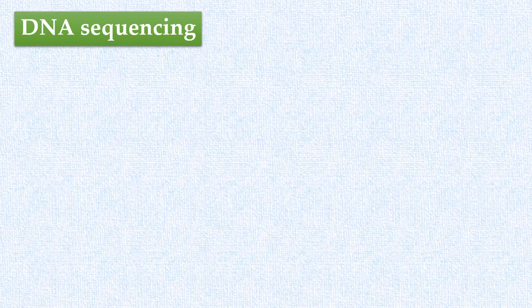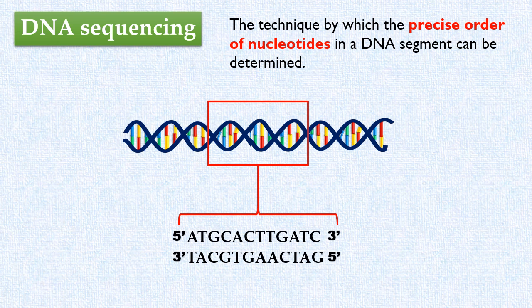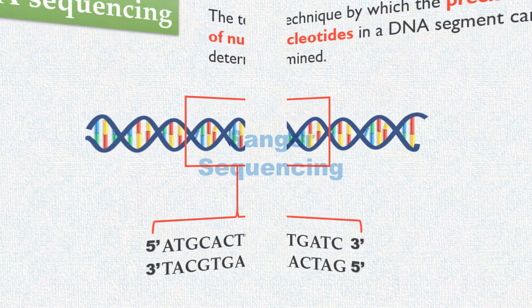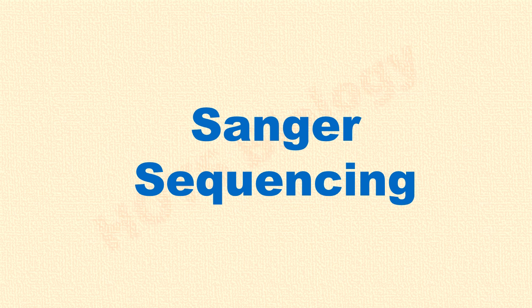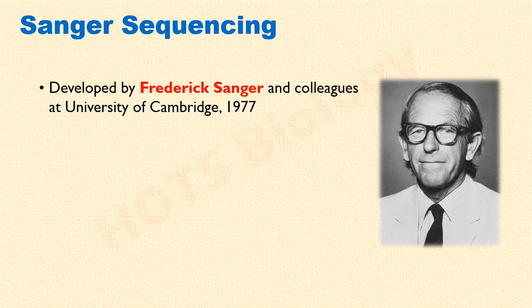What do we mean by DNA sequencing? It is a technique by which the precise order of nucleotides in a DNA segment can be determined. Today we are going to discuss the original Sanger method of DNA sequencing. This method forms the basis of modern computer automated sequencing techniques. Sanger sequencing was developed by Frederick Sanger and colleagues at the University of Cambridge in 1977.